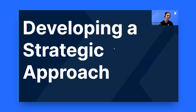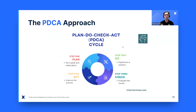Developing a strategic approach: whenever we start building a PM program, we don't want to jump left and right and try to solve everything in one day. This is not realistic. I'll introduce you to two concepts. The first one is the PDCA approach — Plan, Do, Check, and Act. This is a cycle that goes on and on. It's a wheel, it's part of a continuous improvement.